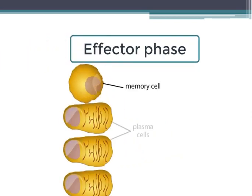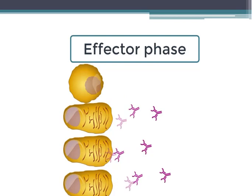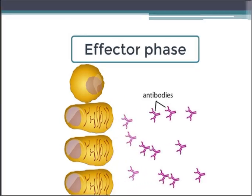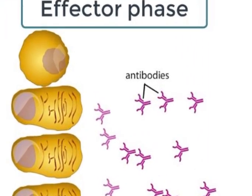Some B cells become memory cells and others differentiate into plasma cells, which are highly specialized cells equipped with the machinery of protein synthesis needed for antibody production. Those antibodies circulate lymph and blood and mainly contribute to the elimination of soluble toxins and extracellular pathogens.